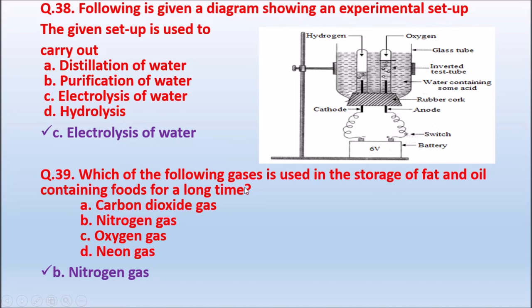Question 39 (40): Which gas is used in the storage of fat and oil containing foods for a long time? Options: carbon dioxide gas; nitrogen gas; oxygen gas; neon gas. For storage of fat and oil containing foods for a long time, nitrogen gas or helium gas are used. The correct answer is nitrogen gas — Option B.